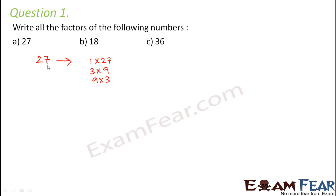So again as you move on like this, you find that again finally the next thing that you can write is 27 into 1. So basically from this you see that 1, 3, 9, 27 are the factors of 27.